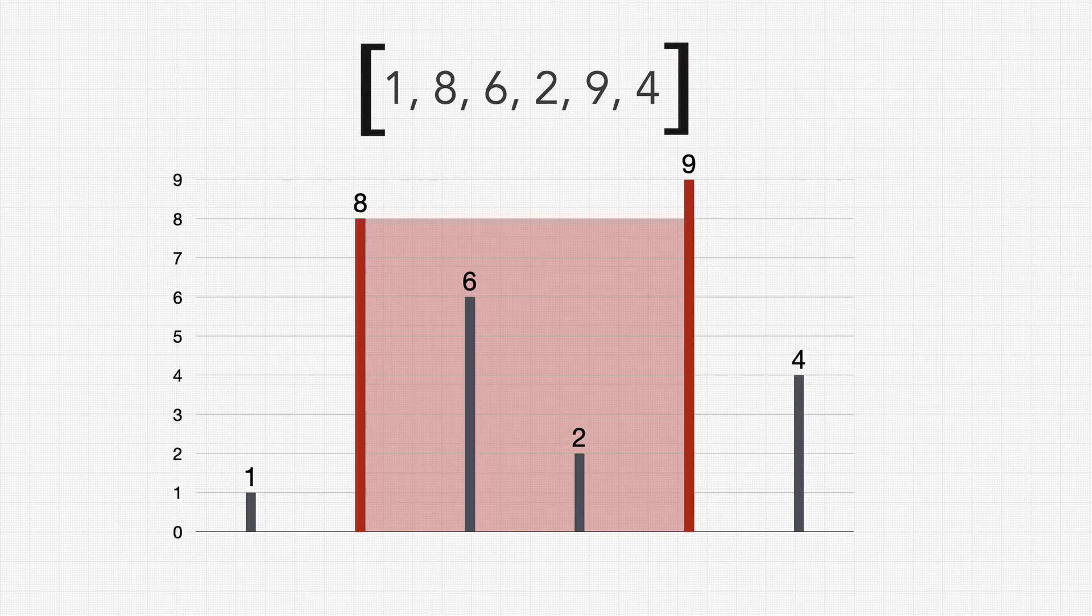What we'll notice is that the area only goes up to the 8 because if this were some container and water were to be poured in here even though the right side 9 is taller the water would spill out over the left side of the 8.